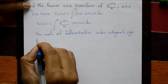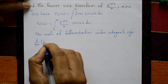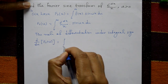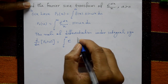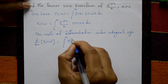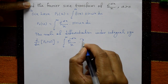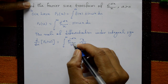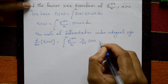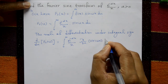The left-hand side is d by du of Fs(u), which equals the integration from 0 to infinity of e to the power minus alpha x over x, times the partial derivative with respect to u of sin(ux), dx.